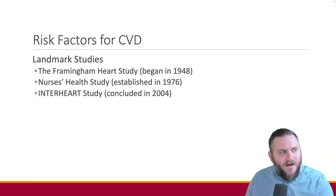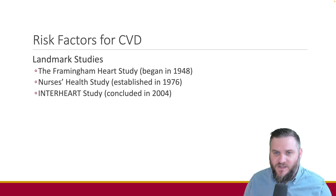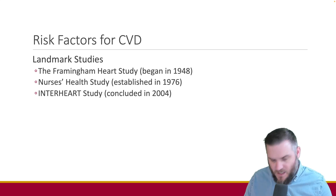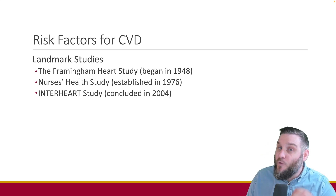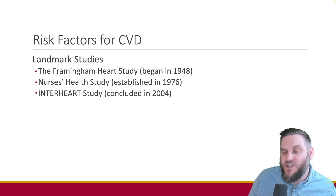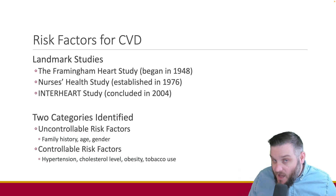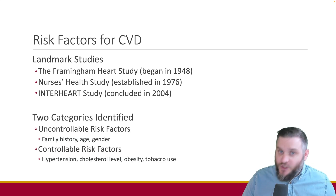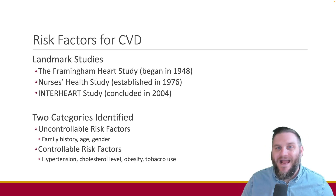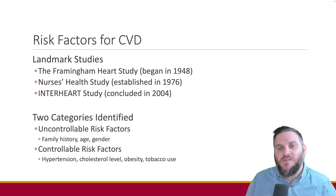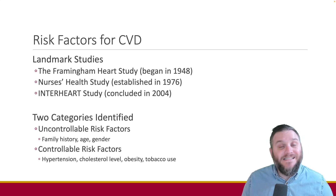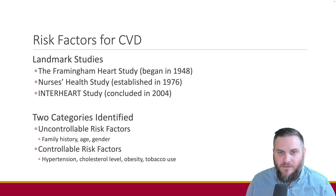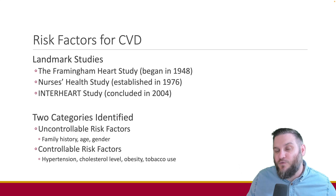Various studies have helped identify risks for CVD, including the Framingham Heart Study which began in 1948, the Nurses' Health Study established in 1976, and the ongoing INTERHEART Study since 2004. Some risk factors are considered uncontrollable, like family history, age, gender, and ethnicity. Other risk factors are controllable, like hypertension, obesity, elevated serum cholesterol from diet, metabolic syndrome from a sedentary lifestyle, and smoking cigarettes or tobacco products.